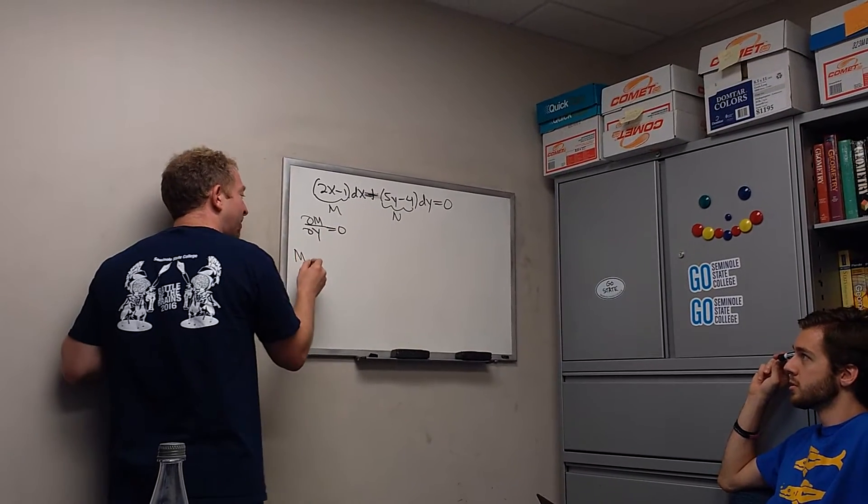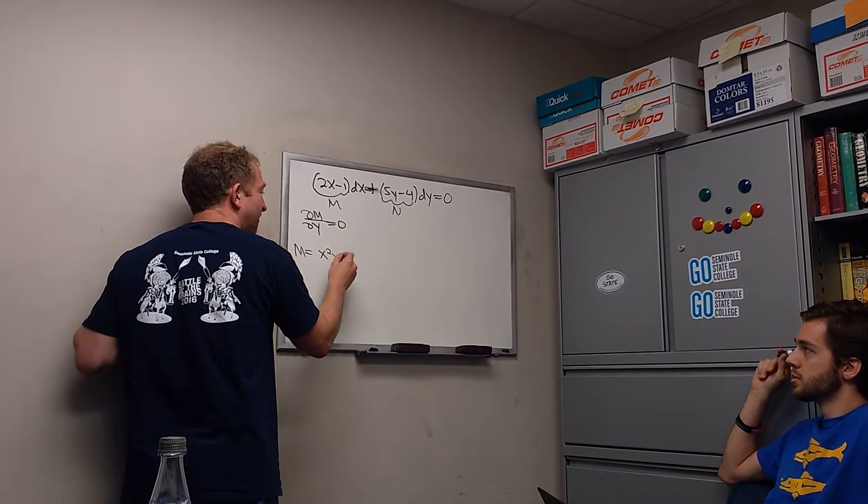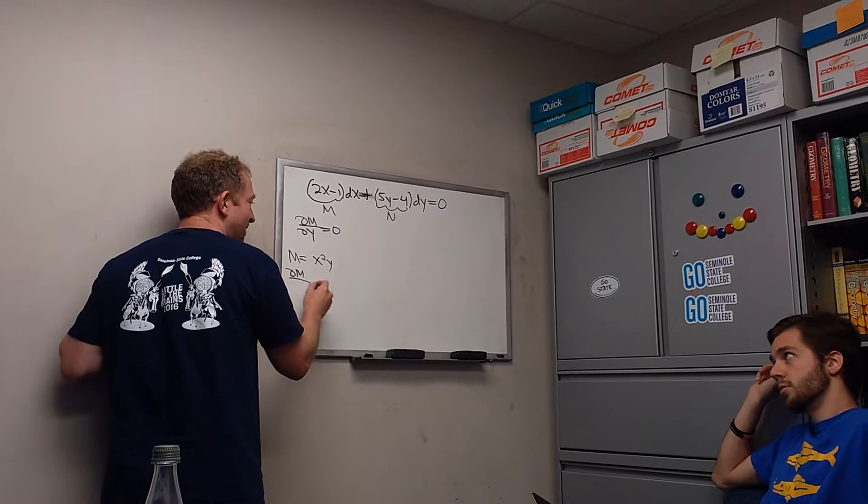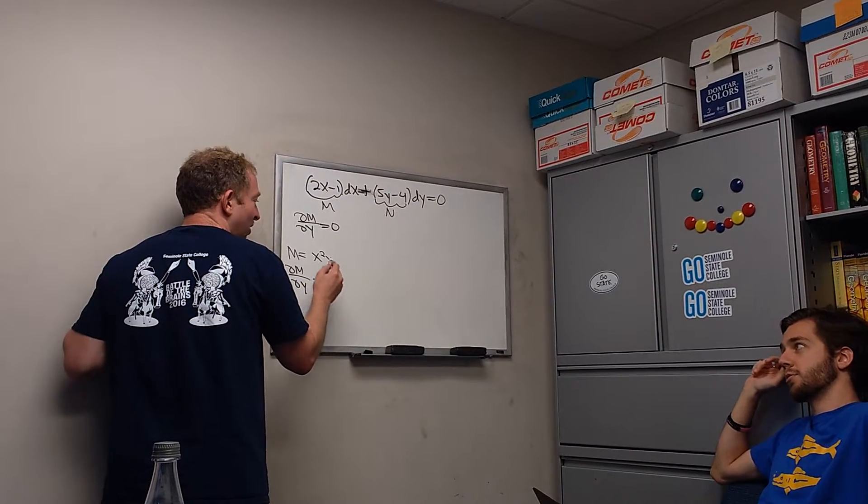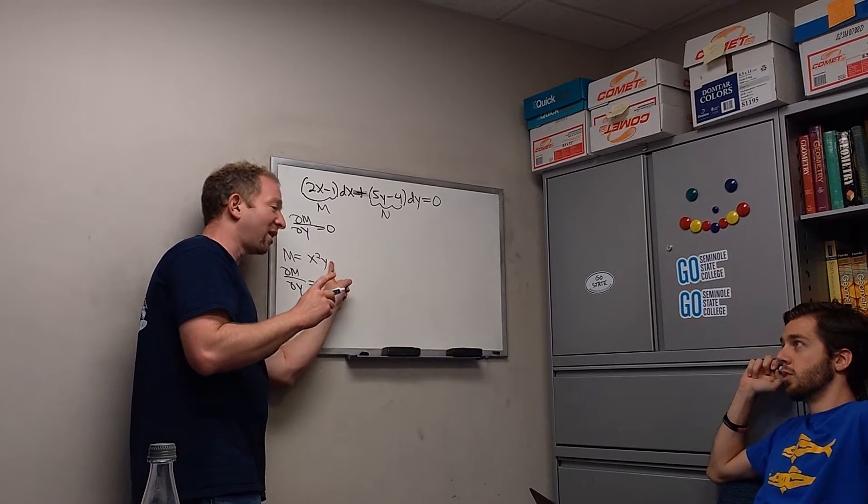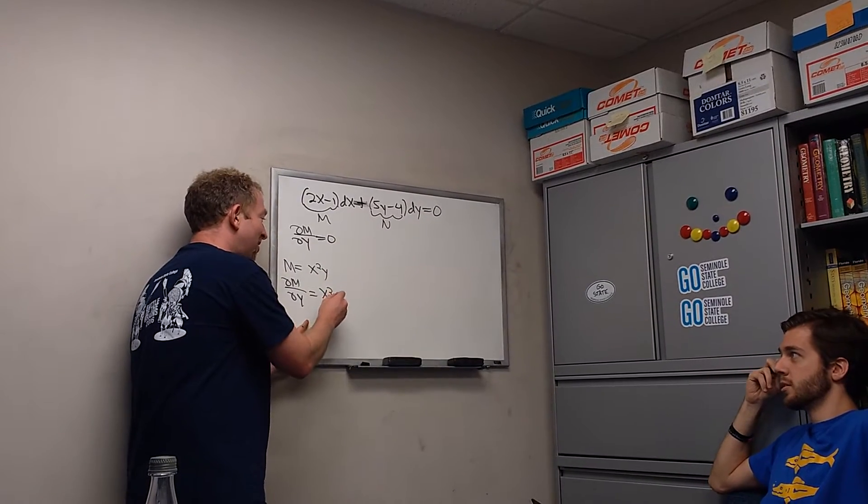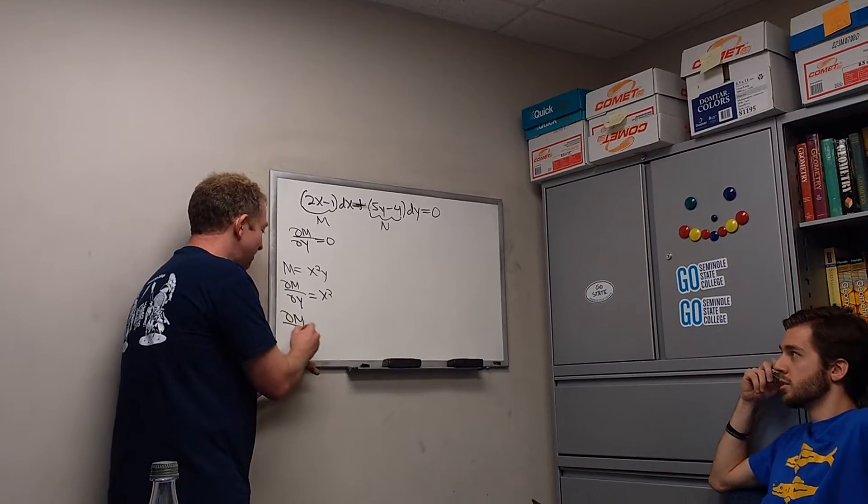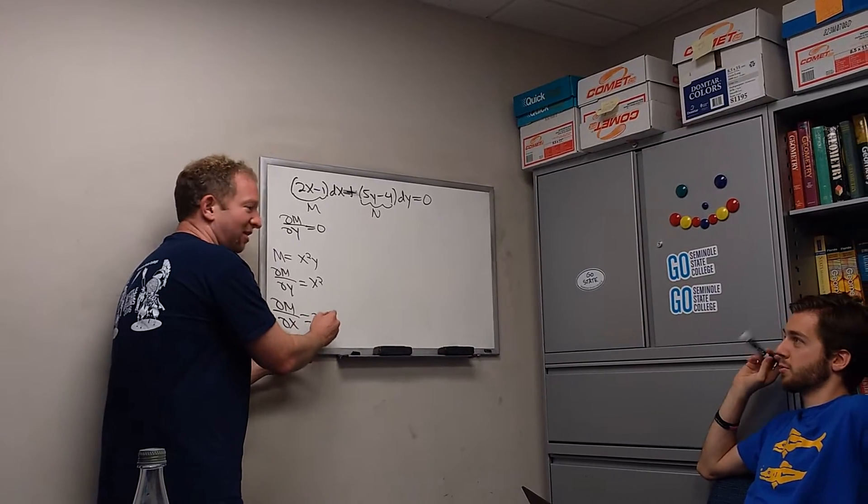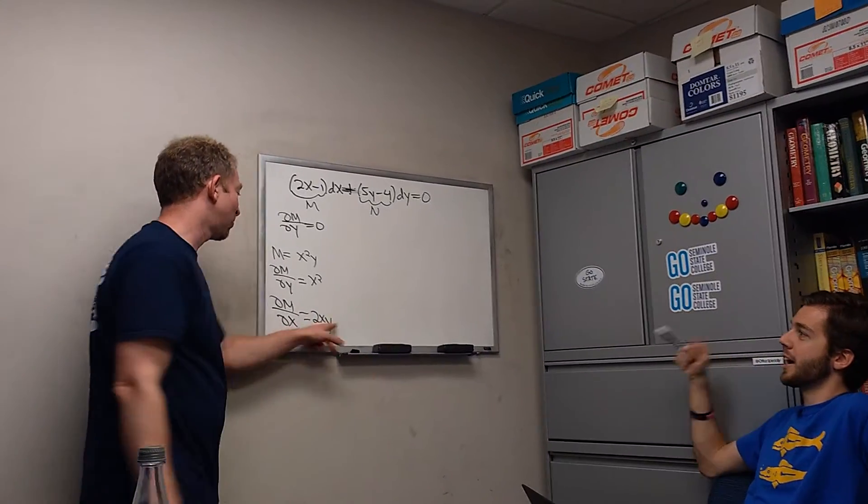Right, for example, if big M was x squared y, then del M del y would be x squared. What's the derivative of y? 1. So x squared hangs out. Yeah. What would del M del x be? That would be 2xy. Oh, okay. So y is constant.